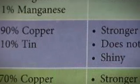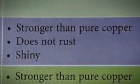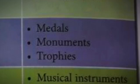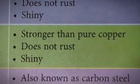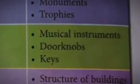Bronze is made up of 90% copper mixed with 10% tin. It is stronger than pure copper, does not rust, and is shiny. Bronze is used to make medals, monuments, and trophies. Brass is made up of 70% copper and 30% zinc. Brass is also stronger than pure copper, does not rust, and is shiny, though bronze is harder than brass. Brass is used to make musical instruments, door knobs, and keys.